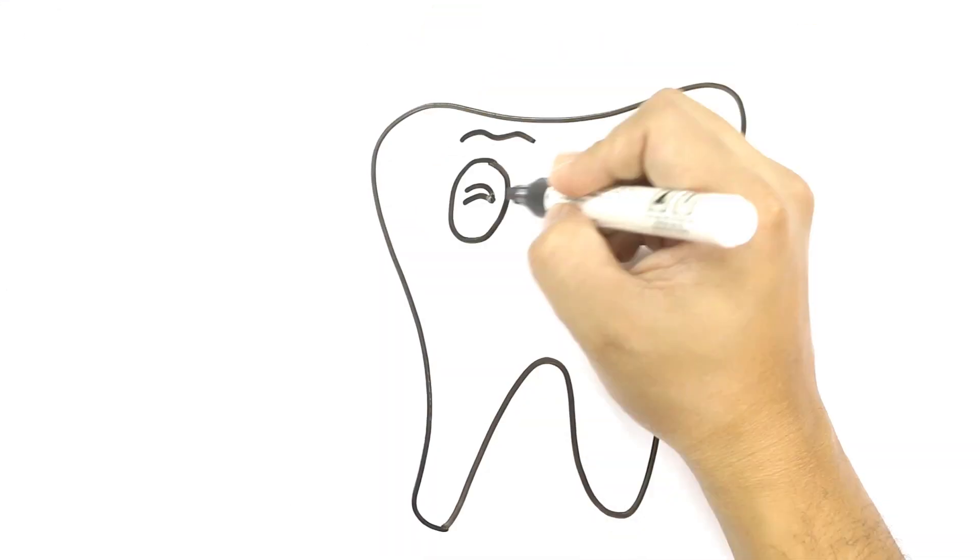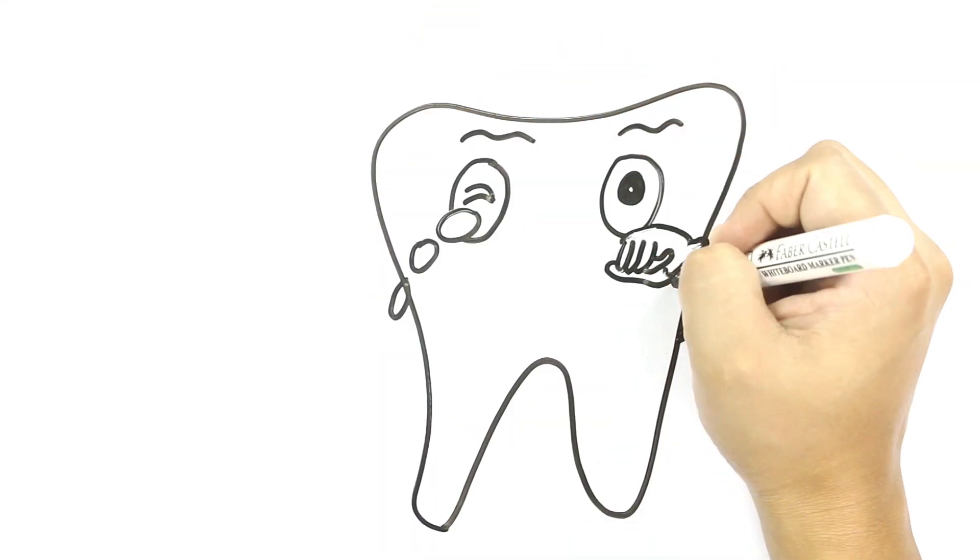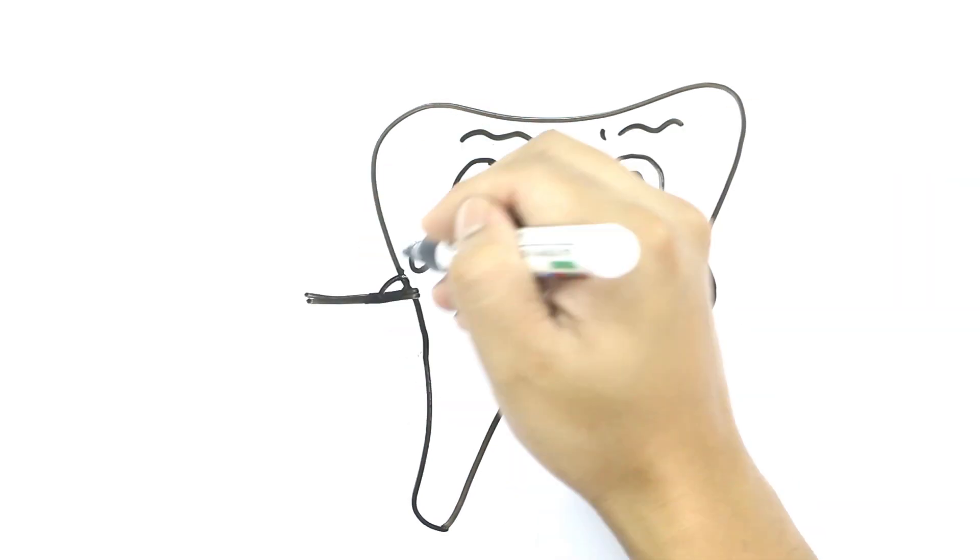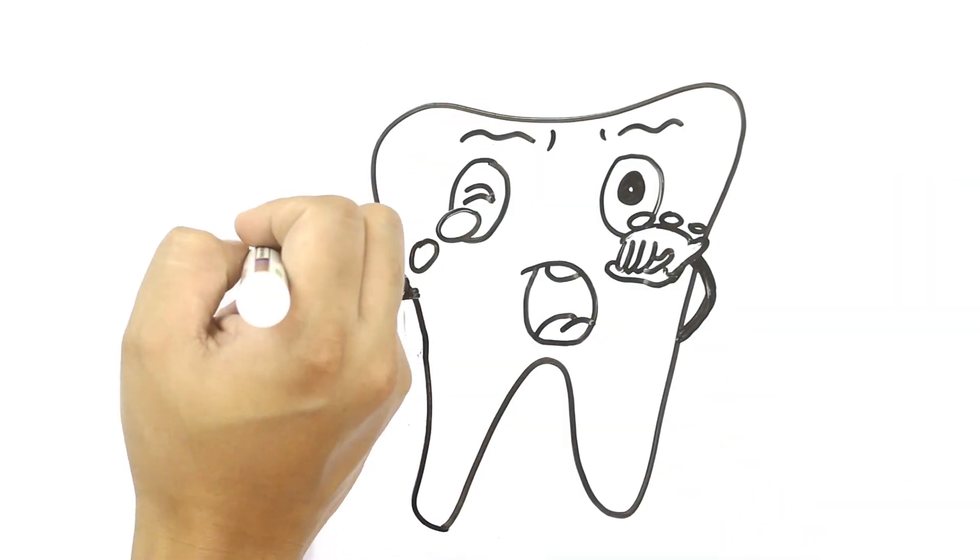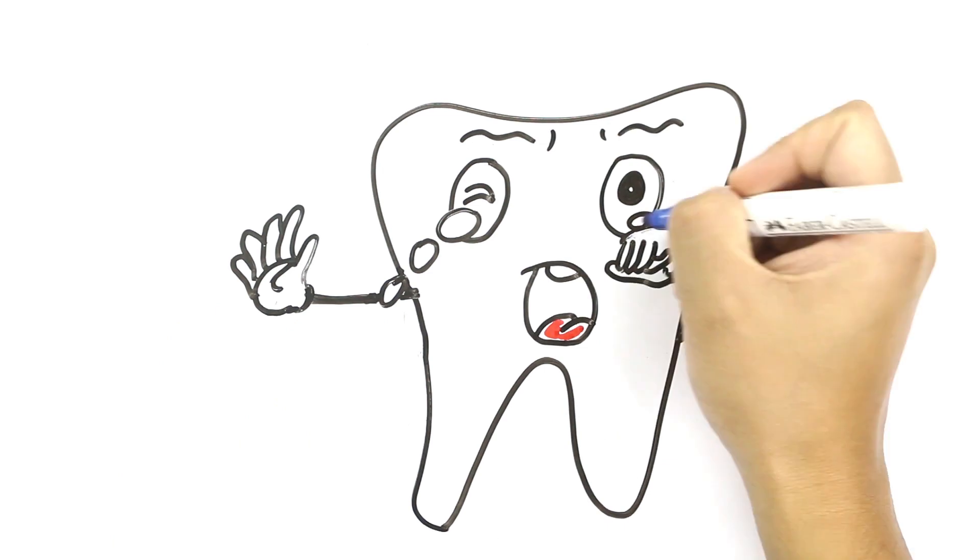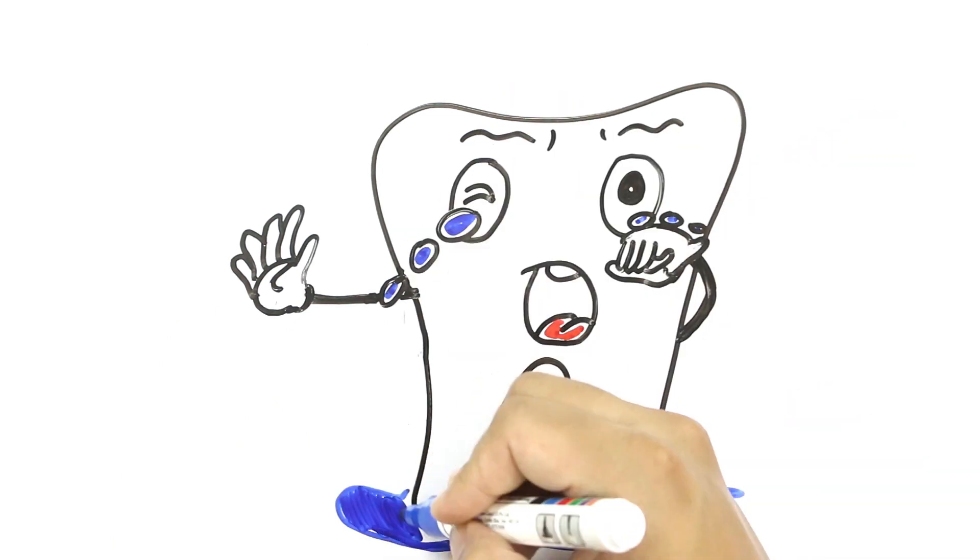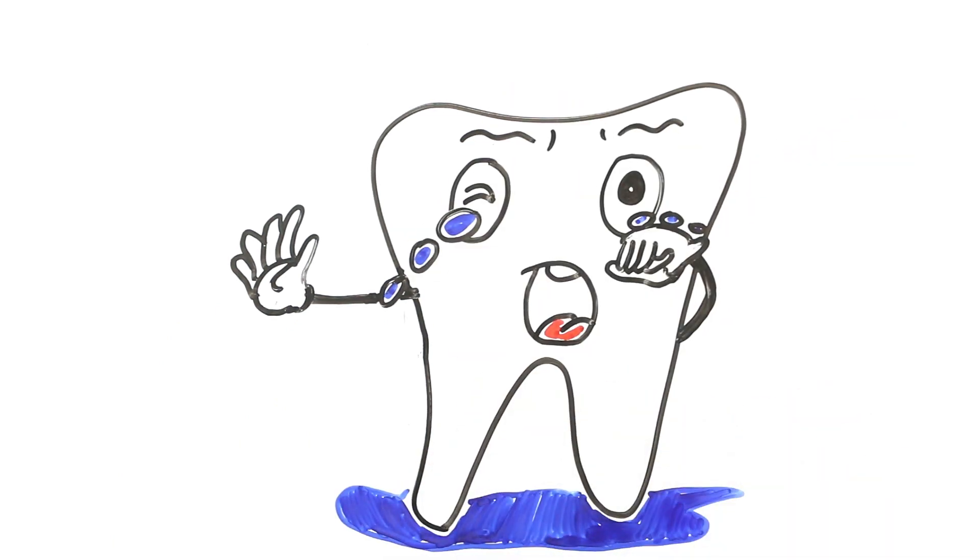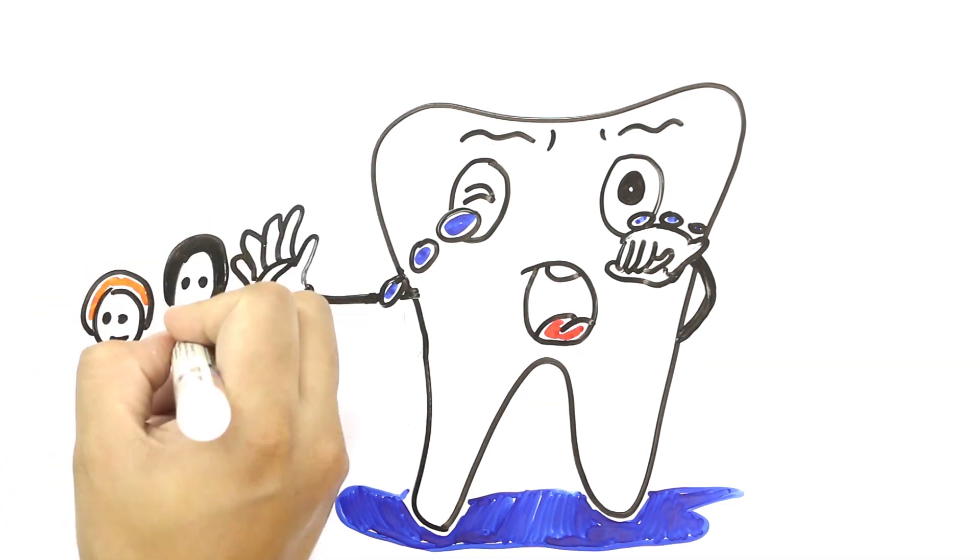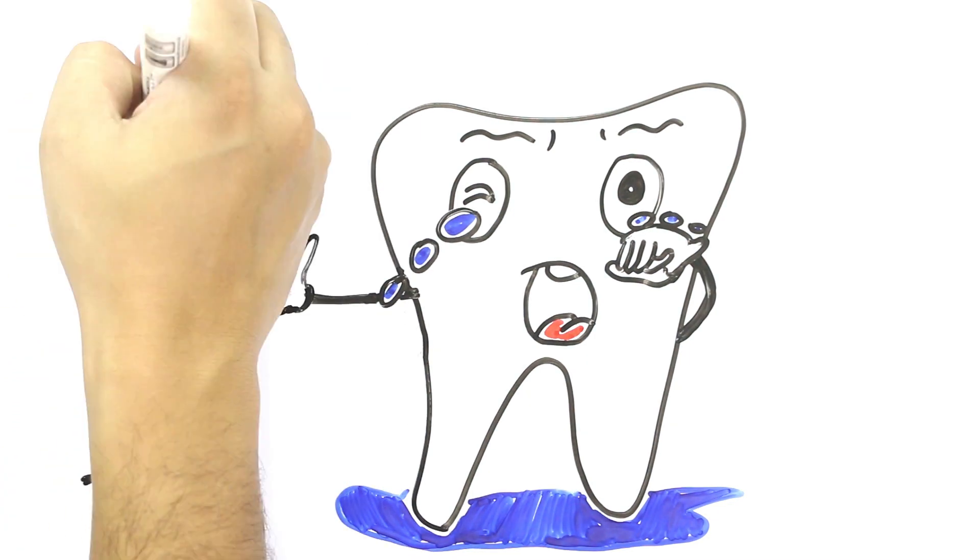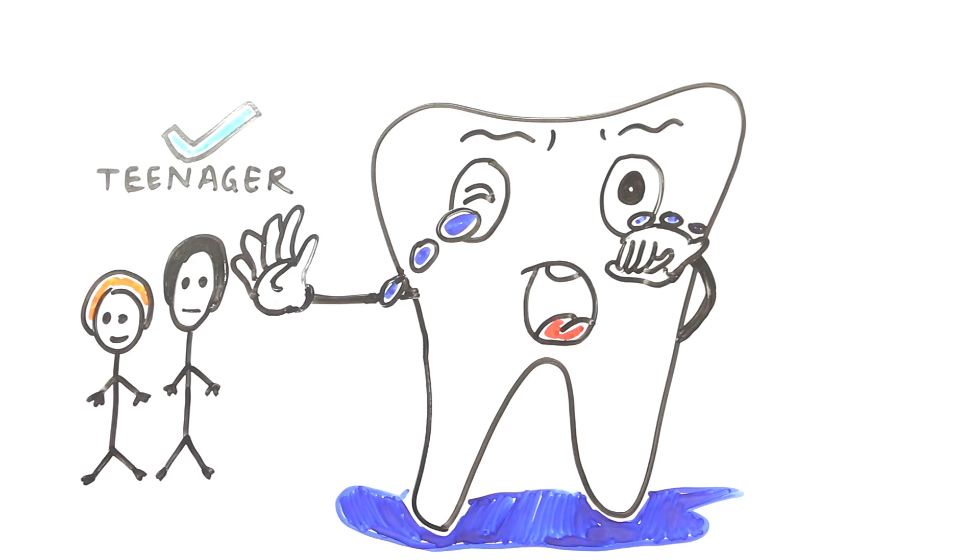But getting wisdom teeth pulled is no fun, and getting them all pulled even less. However, if your teeth are potential problems, it is best to get the matter addressed as soon as possible. Many dentists advise to have them pulled early on. Teenagers or early adults are good candidates for the procedure because the roots of the teeth are often not fully formed yet, and recovery time is quicker and easier.